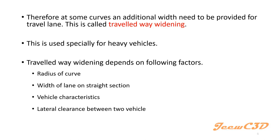The fourth factor is lateral clearance between two vehicles. When a vehicle is traveling on a curve and another vehicle comes from the other side, or if one vehicle is overtaking another, there is a small gap between the two vehicles. In straight sections this gap is relatively small, but in curved sections drivers maintain a larger gap for safer overtaking or traversing movement inside the curve.